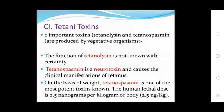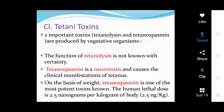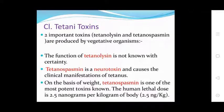Important toxins: tetanolysin and tetanospasmin are produced by the vegetative organism. The function of tetanolysin is not fully understood, but tetanospasmin is a neurotoxin that causes the clinical manifestations of tetanus. On the basis of weight, tetanospasmin is one of the most potent toxins known. The human lethal dose is 2.5 nanograms per kilogram body weight.